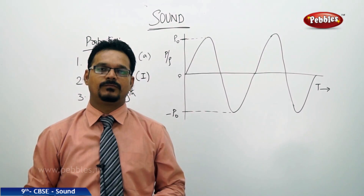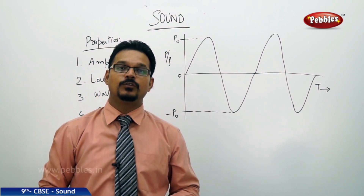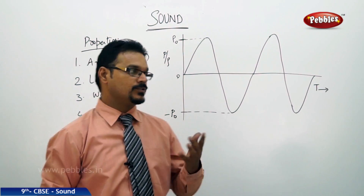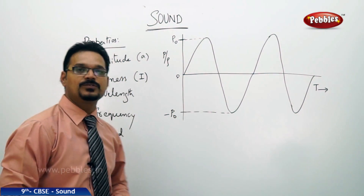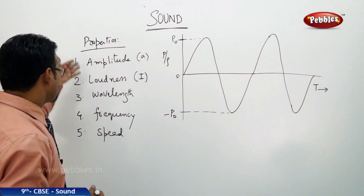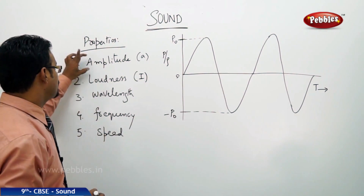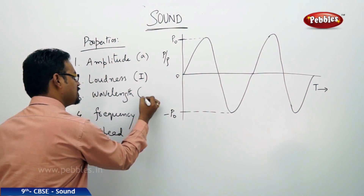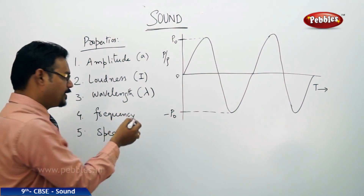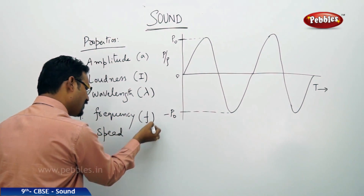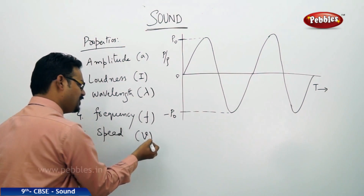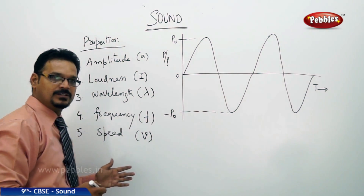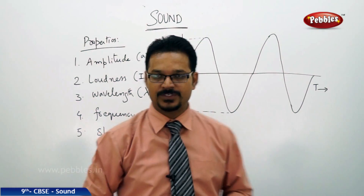Now we are going to discuss the mathematics of sound — that is, the properties of sound. There are five properties we'll discuss: amplitude, loudness, wavelength (represented by the symbol lambda), frequency (represented by F), and speed (represented by V).